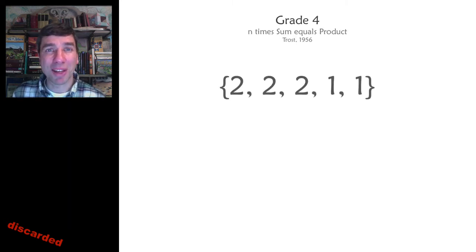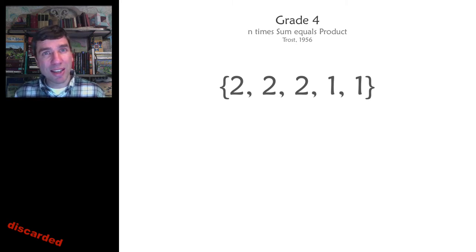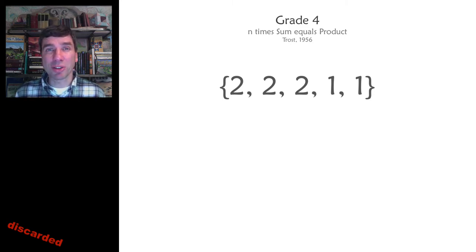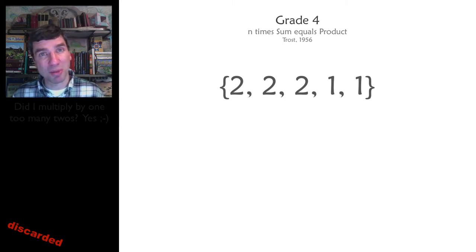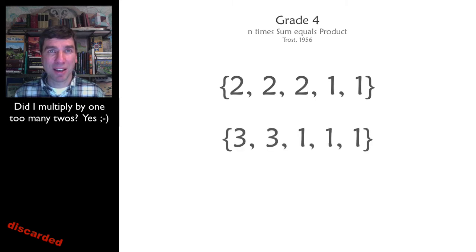Another problem that is probably more practical to implement is to find sets of numbers where the product is equal to the sum. For example, 2 plus 2 plus 2 plus 1 plus 1 equals 2 times 2 times 2 times 2 times 1 times 1. It's interesting, and it's not unique — here are two other examples.